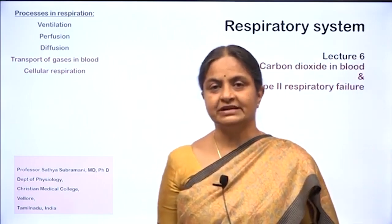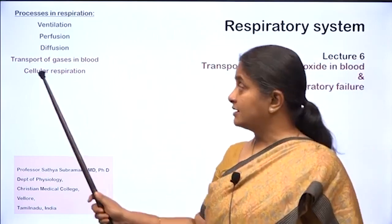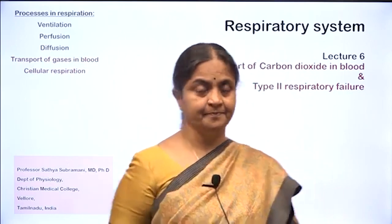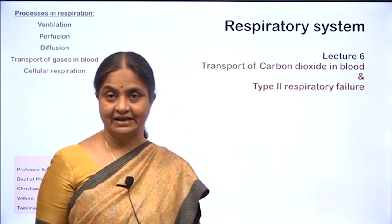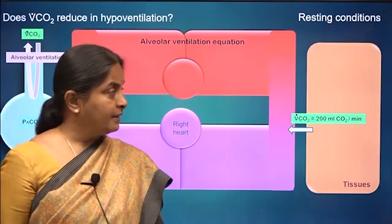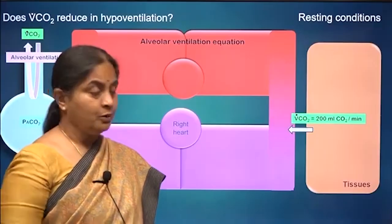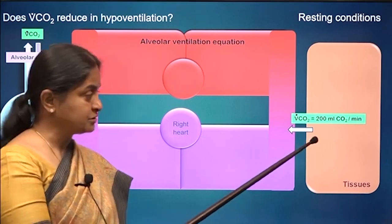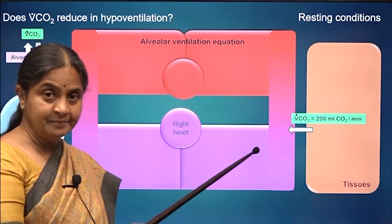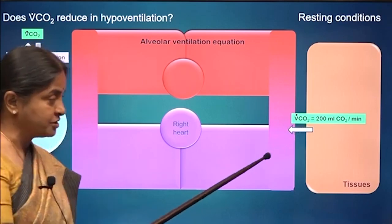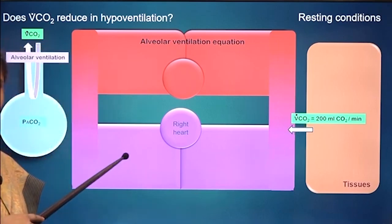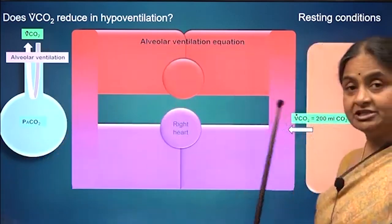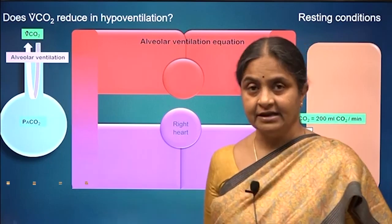In this series of lectures on respiratory physiology, we are currently dealing with transport of carbon dioxide in blood. This is the second part of that lecture. In the previous lecture, we saw how much carbon dioxide is produced by tissues and put out into blood, the forms in which this carbon dioxide travels in venous blood, and the fact that all of what is formed in the tissues is eliminated in the lungs.